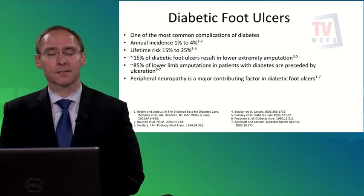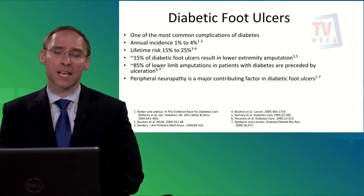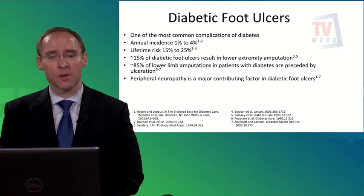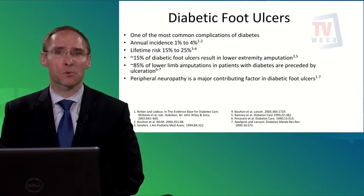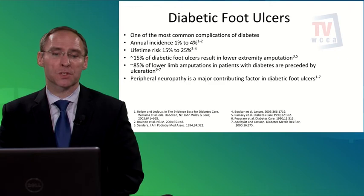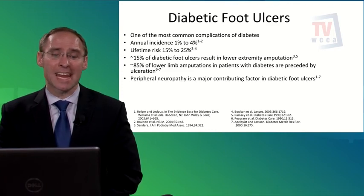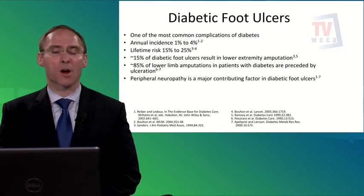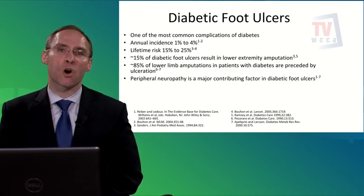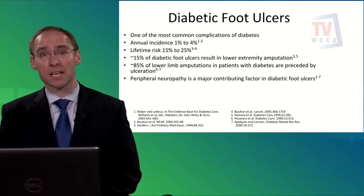Looking at the statistics: diabetic foot ulcers have an annual incidence of 1% to 4%. About 15% to 25% — roughly a quarter of people with diabetes — will develop an ulcer in their lifetime. Of those, 15% lead to an amputation. And 85% of amputations are preceded by an ulcer, meaning that almost all amputations start with an ulcer.